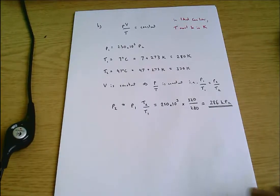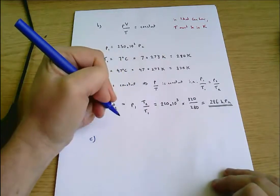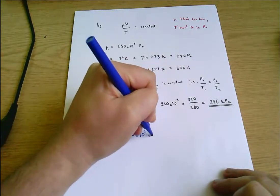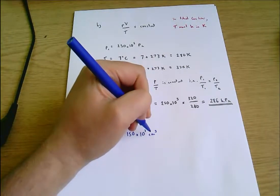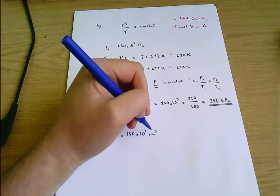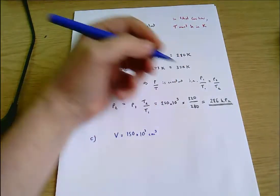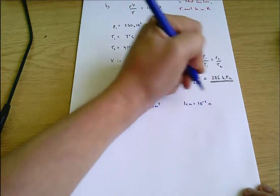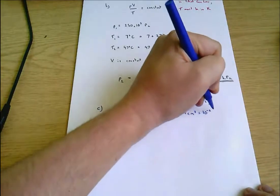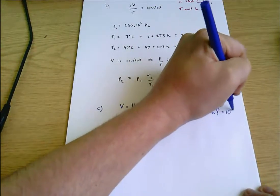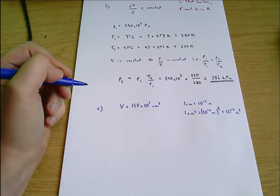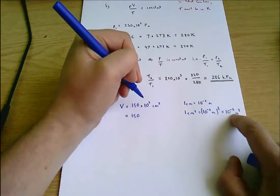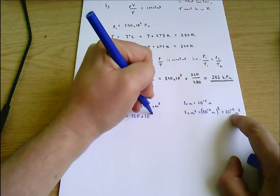Let's finish with part C. A gas sample occupies 150 times 10 to the 3 cubic centimetres. There's a tricky bit here: we've got to work out cubic centimetres in cubic metres. One centimetre equals 10 to the minus 2 metres, so one cubic centimetre equals 10 to the minus 6 cubic metres. So V1 equals 150 times 10 to the minus 3 cubic metres.